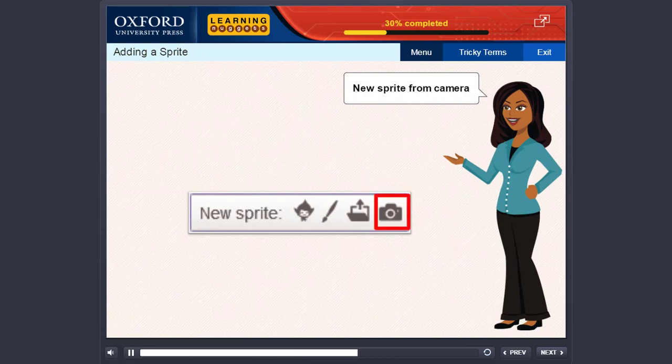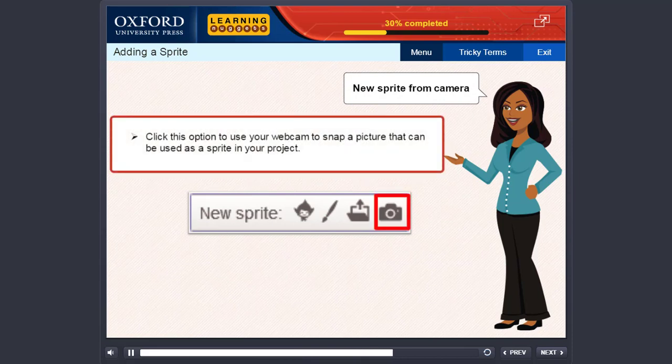New sprite from camera. Click this option to use your webcam to snap a picture that can be used as a sprite in your project.